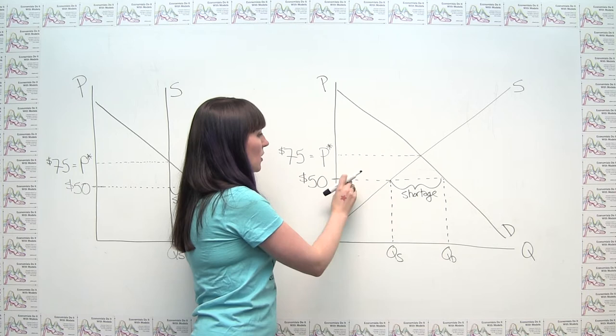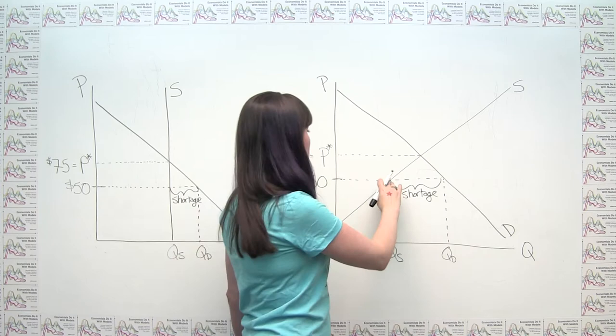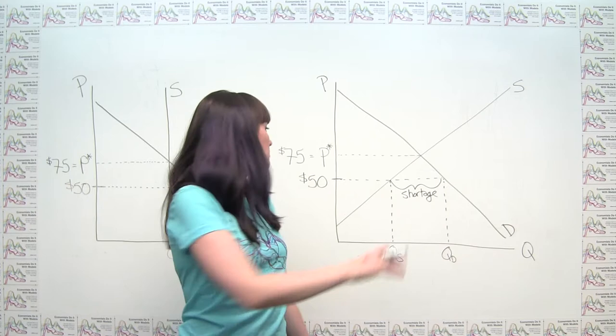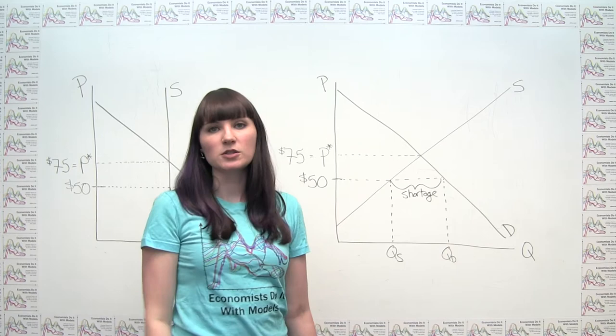So it may be the case that because this shortage gives an incentive to push prices higher that despite this artist's best intentions, we might still see the price ending up back near the $75, or at least some of the people paying a price that's pretty close to the $75. The difference, of course, then being, first of all, if we're going to look at this model, the artist didn't get the $75 rather than the $50, so they didn't have an incentive to produce more. We're still stuck at this level of supply here.